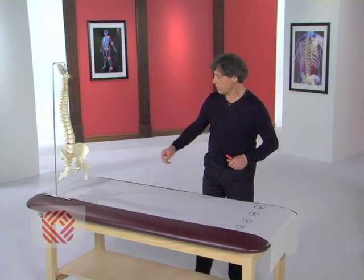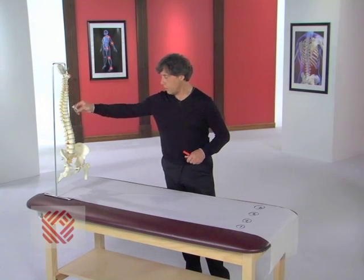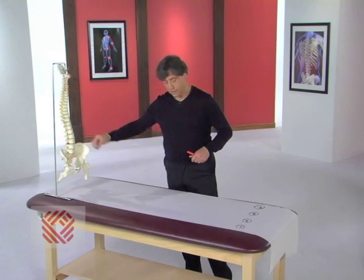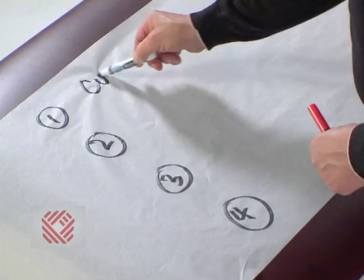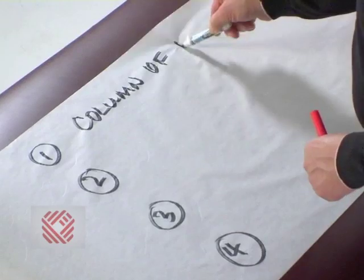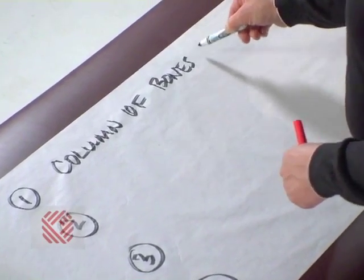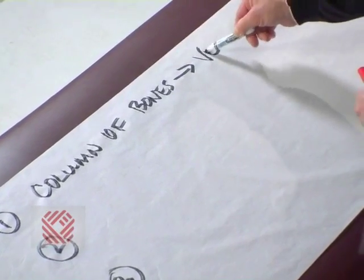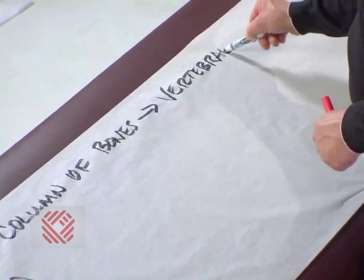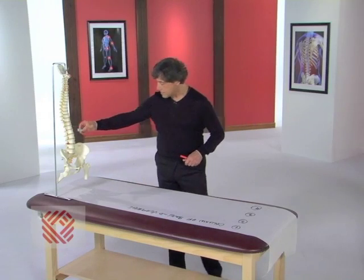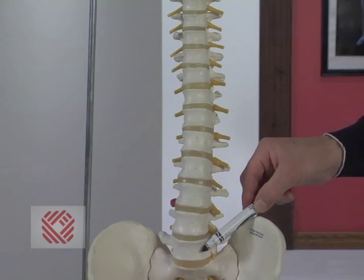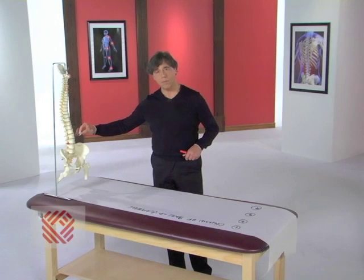First of all, there is a column of bones that are called vertebrae. It is the last five bones or vertebrae that form the low back or lumbar spine.